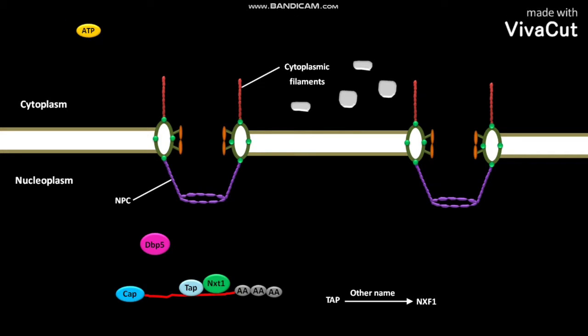This interaction allows the TAP and NXT1 to diffuse through the central channel of NPC or nuclear pore complex. An RNA helicase called as DBP-5 also binds to the mRNA-PS. The DBP-5 also acts as mRNA export protein.